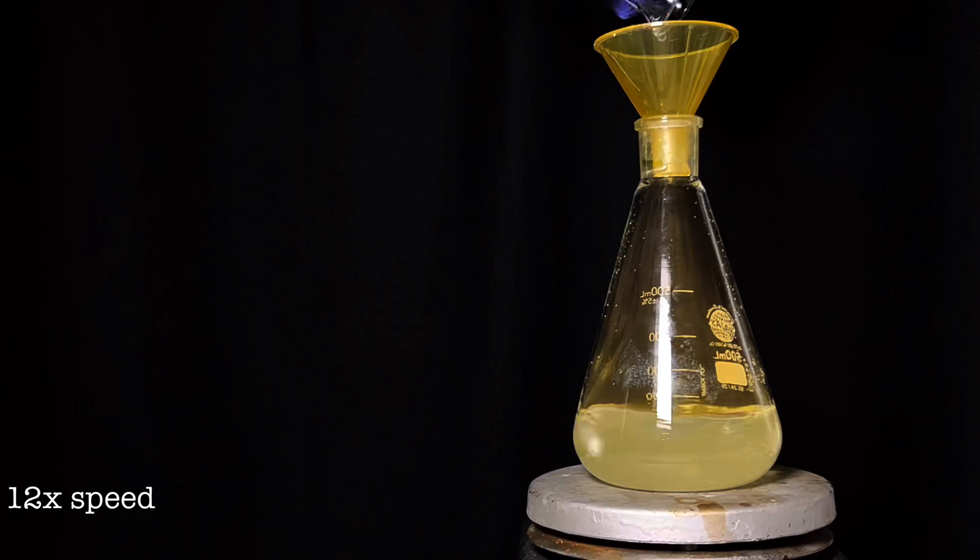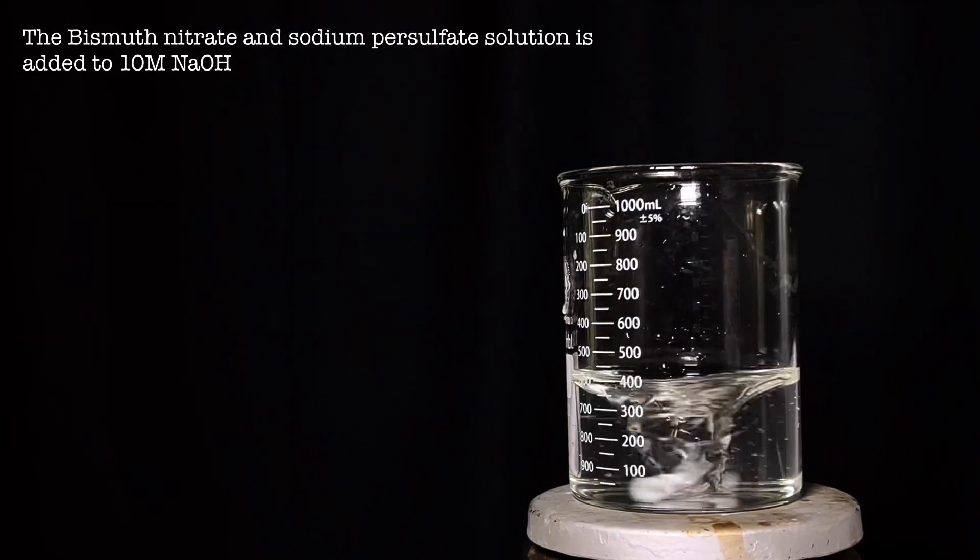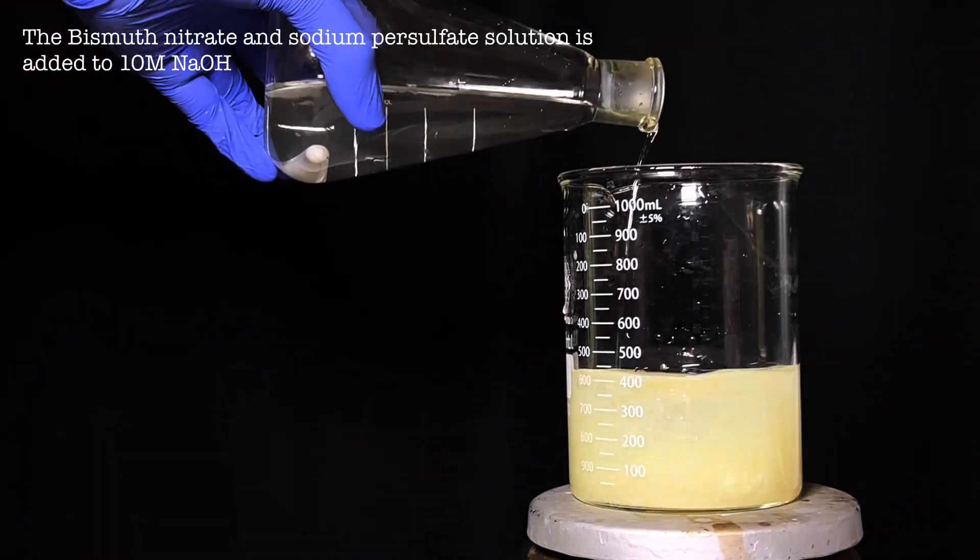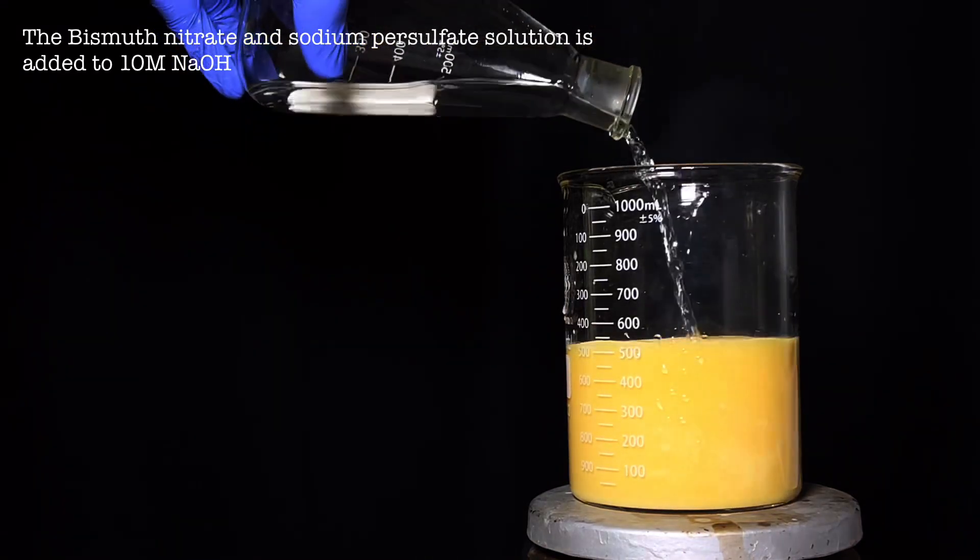Finally the bismuth nitrate and sodium per sulfate solution is added to the 10 molar sodium hydroxide. Immediately a yellow precipitate crashes out.